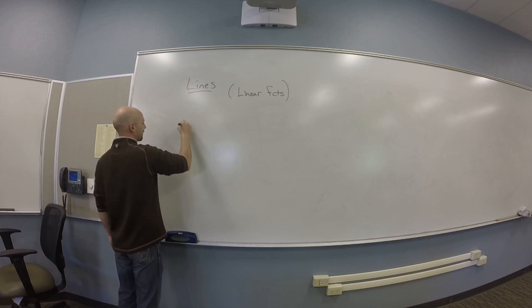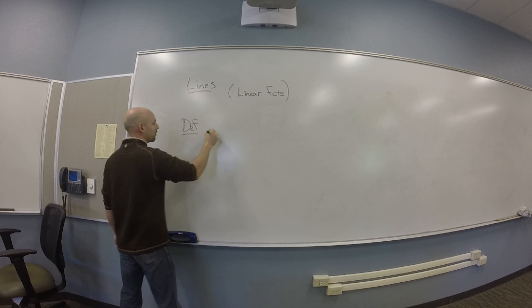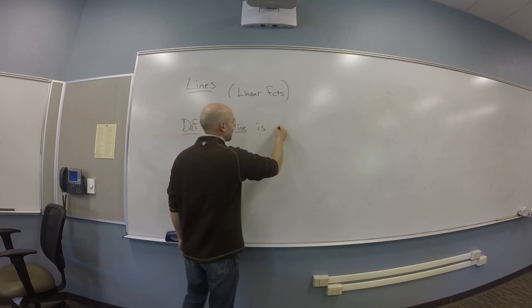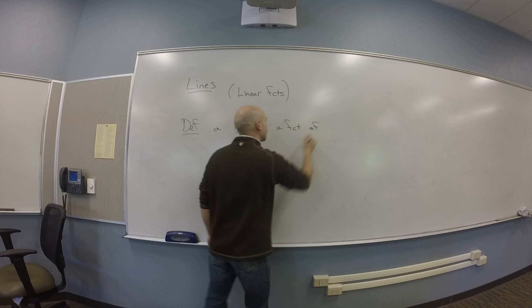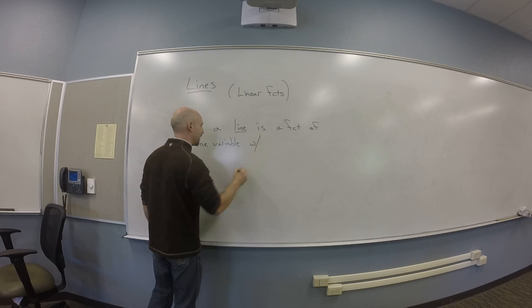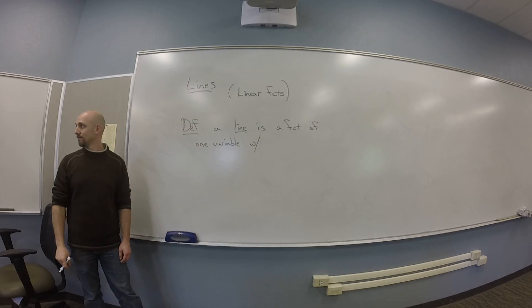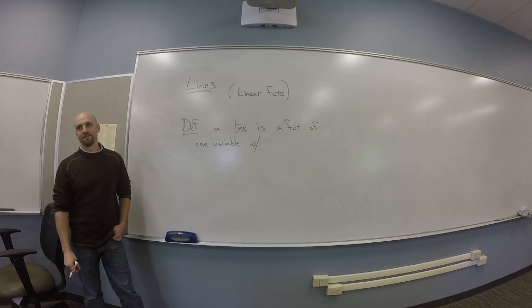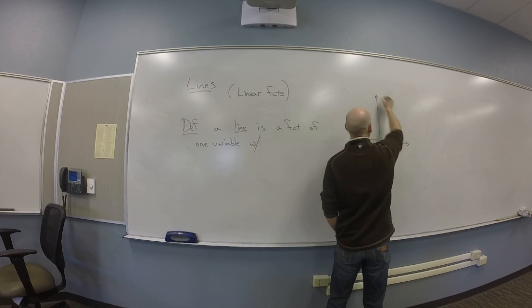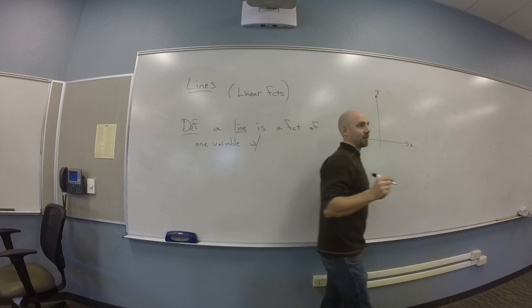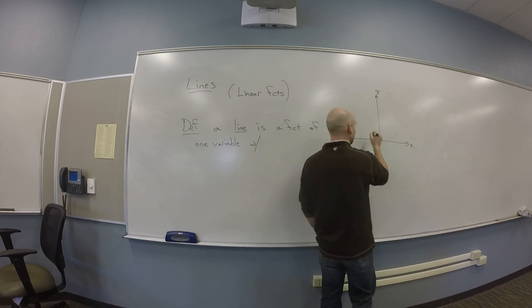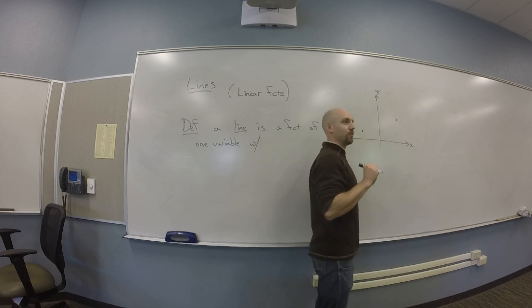So, what characterizes a line? In other words, if I wanted to write a definition — a line is a function of one variable with what? In your head, what's a line? It's a straight line. Here's some axes, right? It has at least two points. It's determined uniquely by two points. So if I tell you here's a point and there's a point, you can draw the unique line that goes through those.